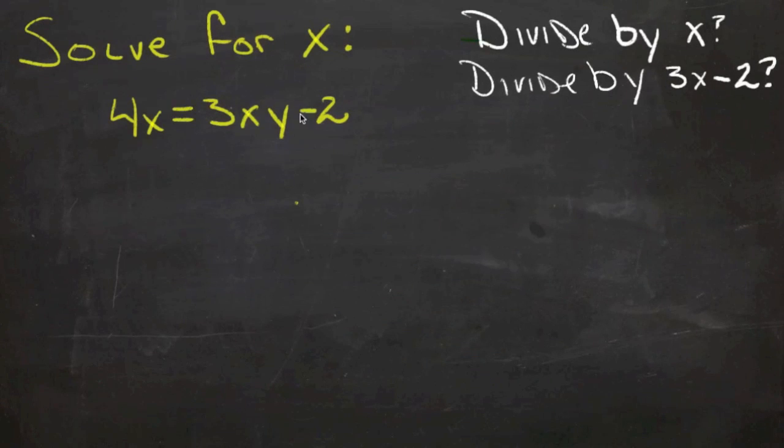Okay, so you need to solve for x in the equation 4x equals 3xy minus 2. And your question is, should you divide by x or should you divide both sides by 3x minus 2?